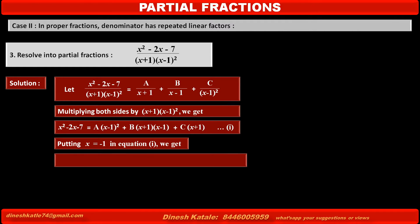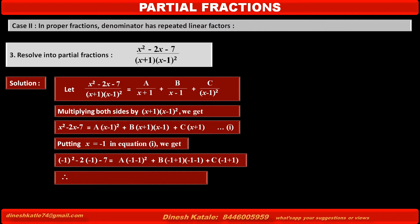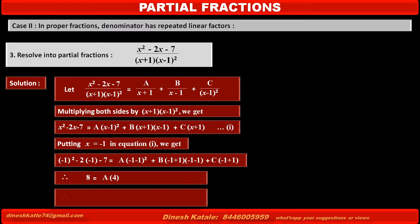Replacing x by -1: the left-hand side becomes (-1)² - 2(-1) - 7. On the right-hand side, the first term becomes A(-1-1)², the second term becomes B(-1+1)(-1-1), and the third term becomes C(-1+1). Solving, we get 8 = A × 4, therefore A = 2.